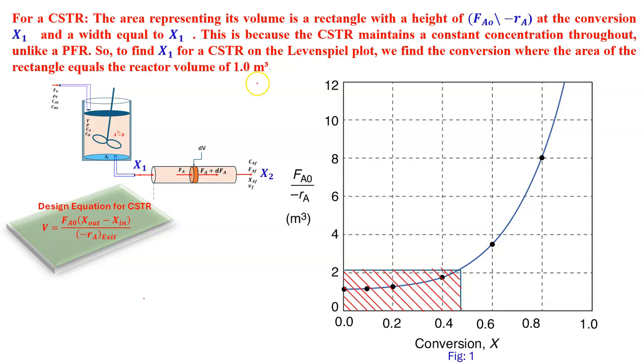For CSTR, the area representing its volume is a rectangle with a height of FA0 minus RA at a conversion X1. The width is X1 and height is FA0 minus RA. If we multiply that, that will give the CSTR volume and that should be 1 meter cube. This is because CSTR maintains a constant concentration throughout, unlike a PFR. To find X1 for a CSTR on Levenspiel plot, we find the conversion where the area of the rectangle equals the reactor volume.